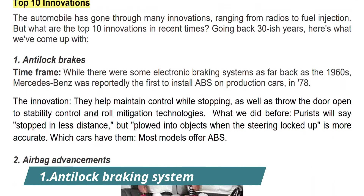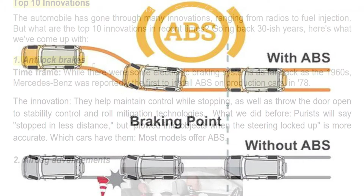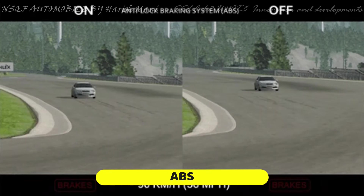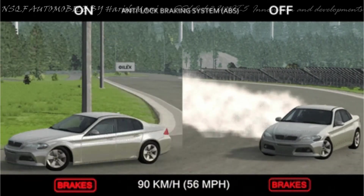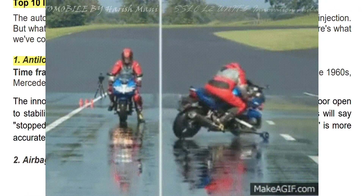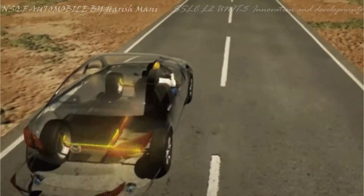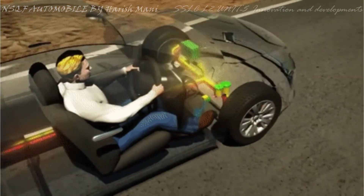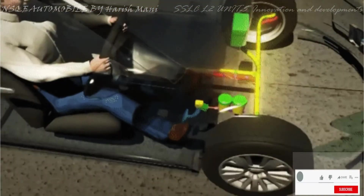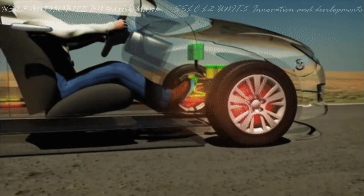The first innovation is anti-lock brakes — Anti-lock Braking Systems, or ABS. We need to use ABS, the anti-lock brakes. After a car drives and the wheel is engaged, we can apply the brakes. It allows the wheels to be released, and we need this technology to prevent accidents.